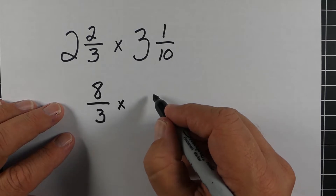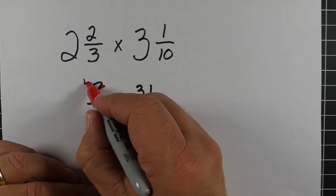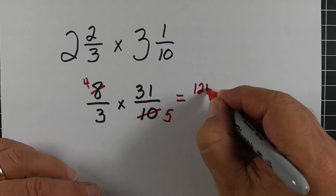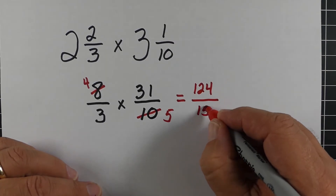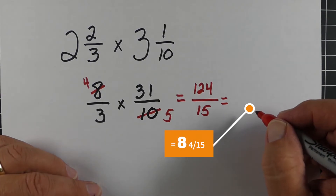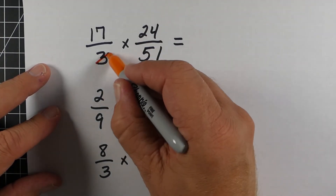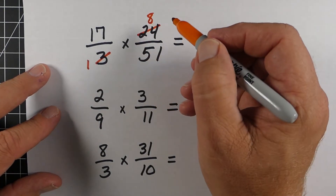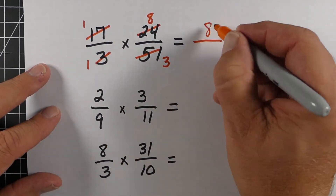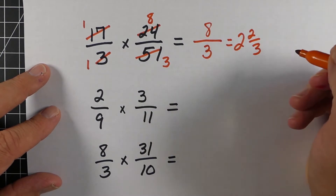Here's another example. We take two and two-thirds and three and one-tenth and write them as improper fractions. You can see diagonally that the number two will go into both the 10 and the 8. When we multiply across now, it's a little easier. The answer here is eight and four-fifteenths. Here are three quick problems where we look for ways to simplify: three went into both those numbers, and 17 actually went into both those numbers, making it much easier — eight-thirds is a lot easier than dealing with larger numbers like 17 and 24.